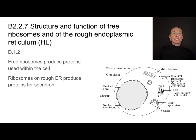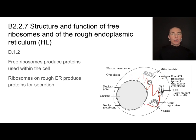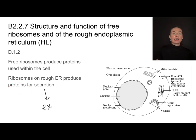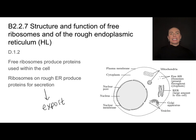Ribosomes that are free-floating in the cytoplasm are going to be producing proteins that are needed within the cell. Ribosomes attached to the rough ER are going to be producing proteins for secretion — proteins that are going to be exported from the cell. For example, in a pancreas cell, these ribosomes might produce insulin, and that insulin is going to be secreted out of the cell and sent elsewhere. So both types are producing proteins, just proteins for uses in different places.